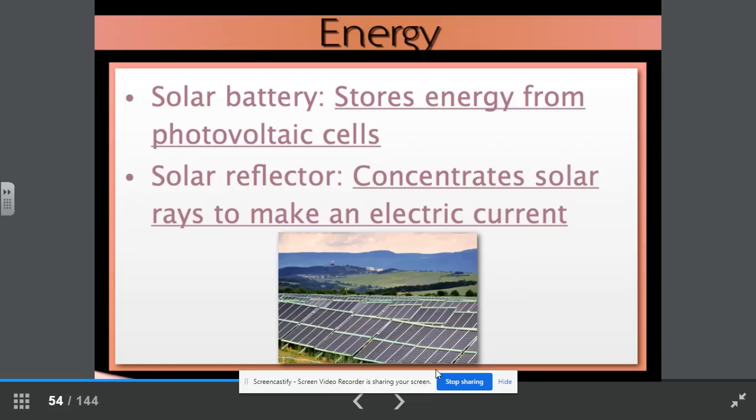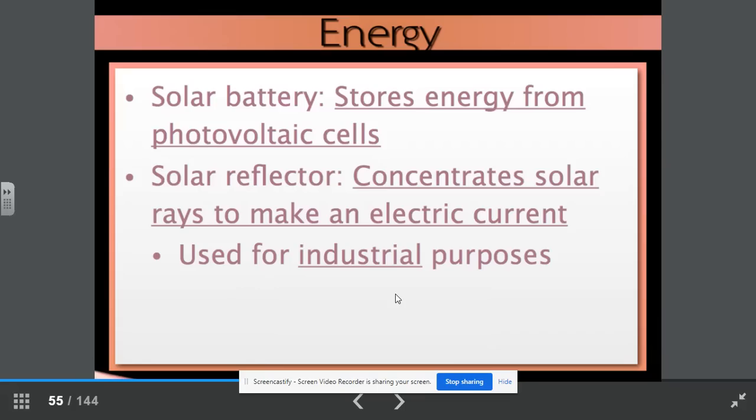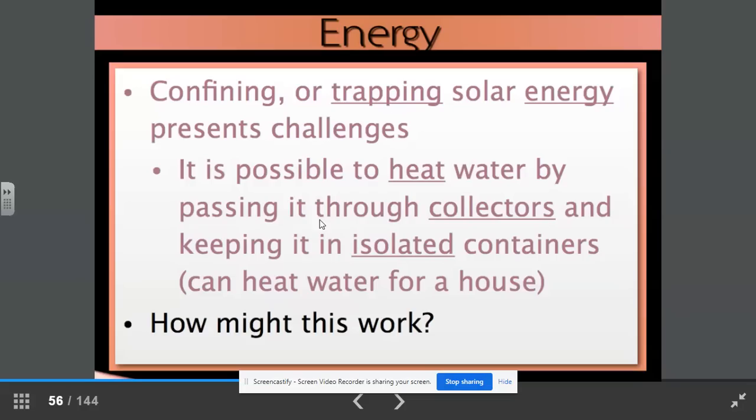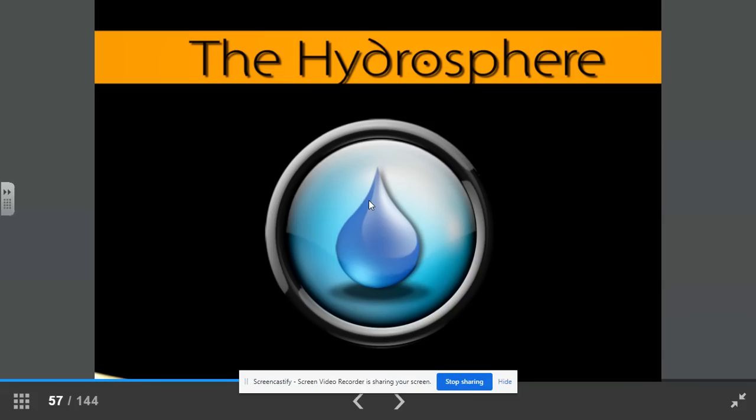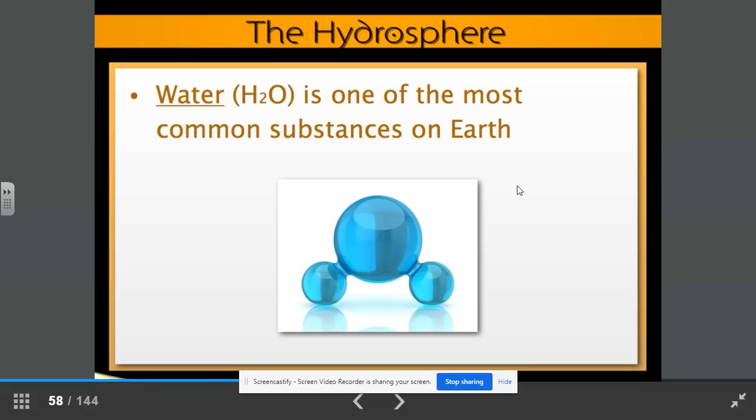Solar reflectors and solar energy can be used for industrial purposes. Confining or trapping solar energy presents challenges though. It is possible to heat water by passing it through collectors and keeping it in isolated containers. It's a great way to heat water for a house. Think about how this might work. The hydrosphere. Go ahead and turn your page in your notebook to page eight.